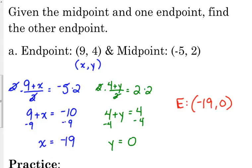Now we can check this really quickly. Now that we have the two endpoints, if we add them together and divide by two, we should get the midpoint. Negative 19 plus nine is negative 10. Divided by two, negative five. That checks out. Zero plus four is four. Divided by two is two. That checks out. So that is our endpoint.